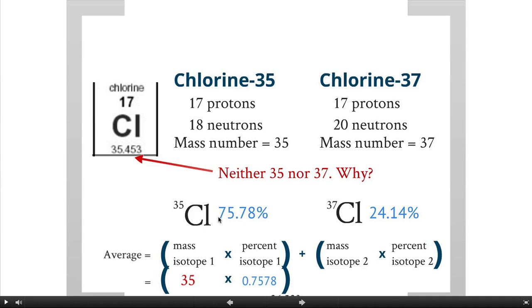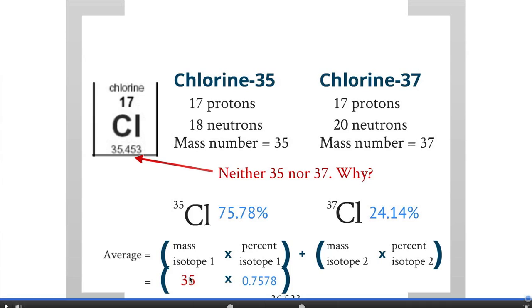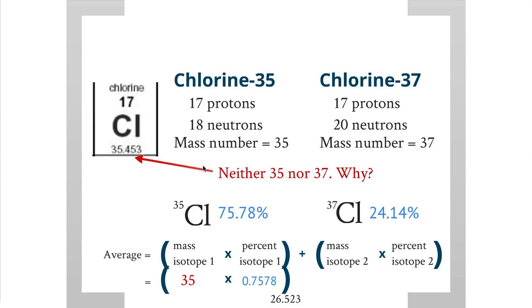So 35 times 0.7578 is equal to 26.523. Okay, now we move on to the next step.